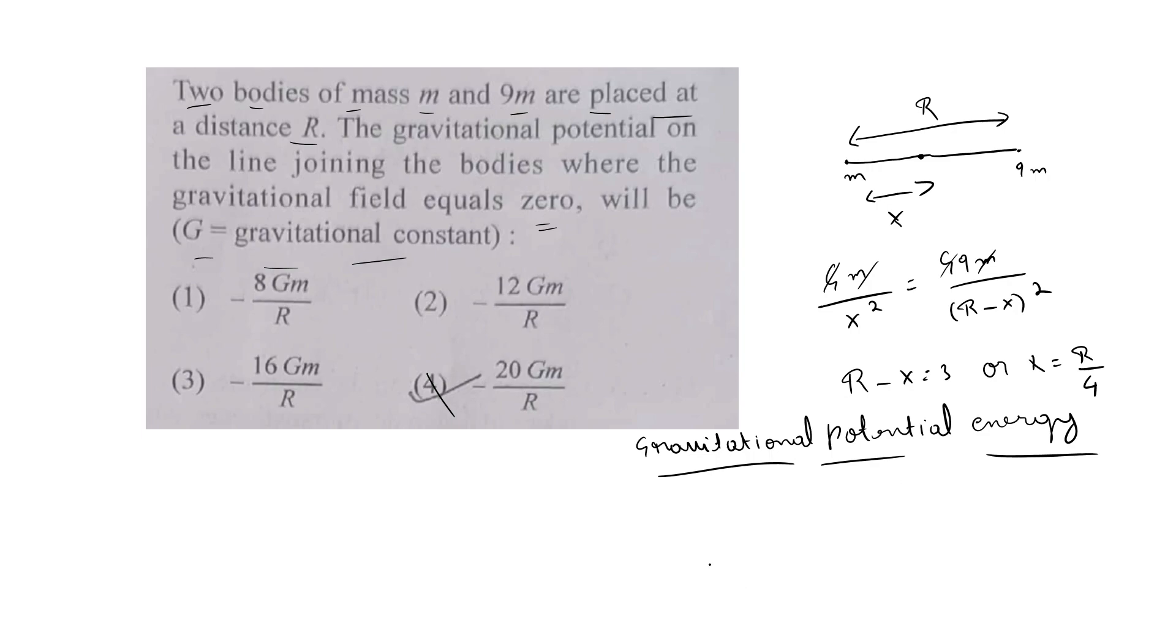This would be minus Gm by R by 4 minus 9Gm by 3R by 4.